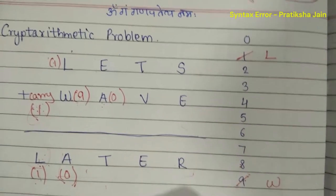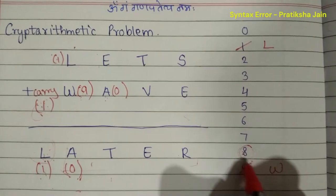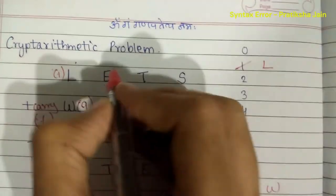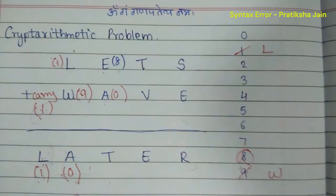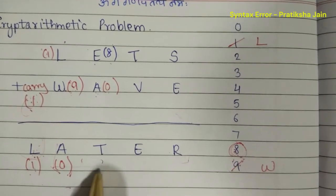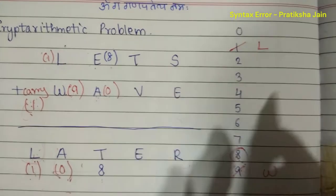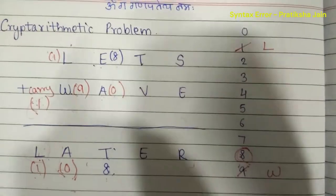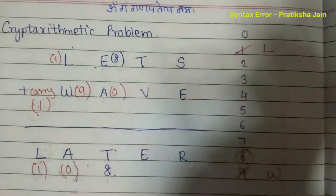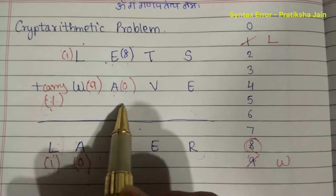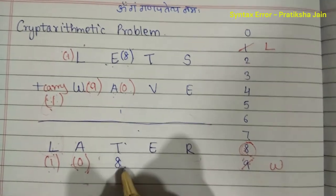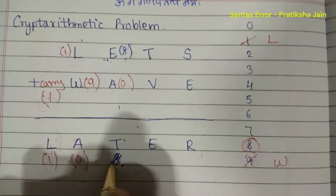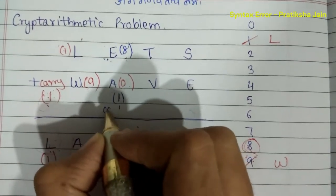We should assign the highest available number to each letter. Let's try assigning eight to E. If E is eight, then eight plus zero gives eight — but that would be wrong, because eight is already assigned to E and we can't assign eight again to another letter. So even if we try seven, seven plus zero gives seven — the same problem. And if we take a carry, eight plus one gives nine, but nine is already assigned to W. So E cannot be eight.